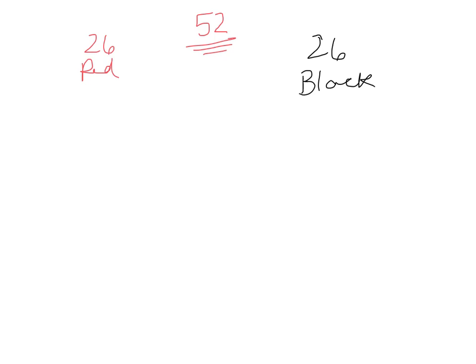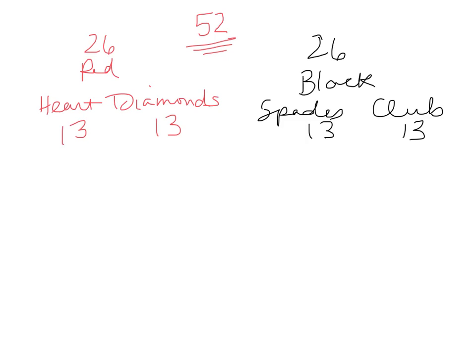so that means there are 26 red cards. Half of those are black, so 26 black cards. And then there are four suits within each of those. The two red suits are hearts and diamonds. So those are the two red suits, so there's 13 of each of those. The two black suits are spades and clubs. And there are 13 of those. Okay, so that's the breakdown there.